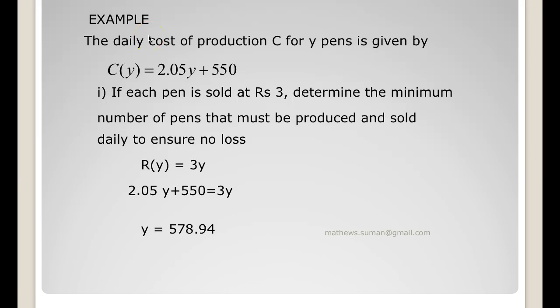Next example: the daily cost of production C for y pens is given by C(y) equals 2.05y plus 550. If each pen is sold at Rs. 3,